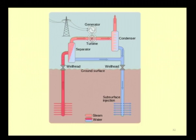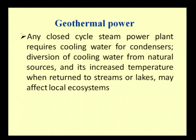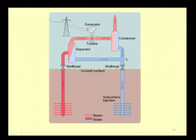The geothermal power plant does not burn any fuel, but it still has emissions such as hydrogen sulphide, carbon dioxide and non-soluble minerals. These must be removed and disposed from the steam before it is used for generation. Any closed cycle steam power plant requires cooling water for condensers. The diversion of cooling water from natural sources and its increased temperature when returned to streams or lakes may affect the local ecosystem.